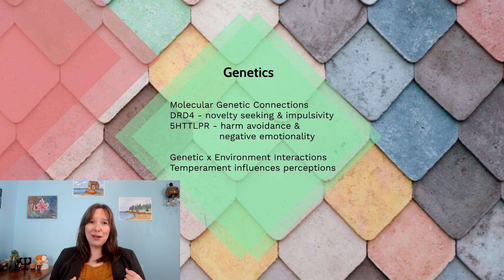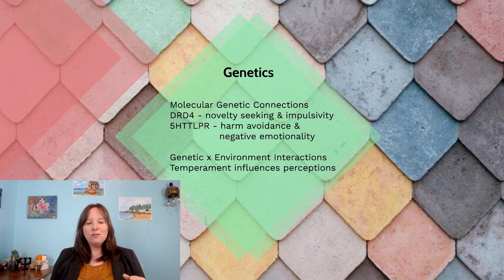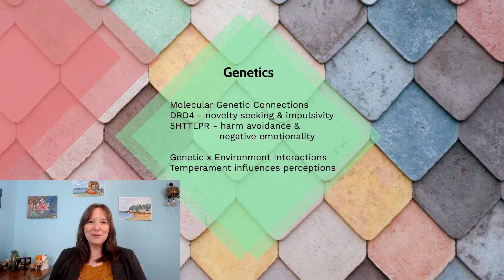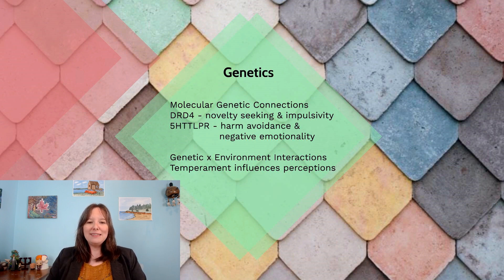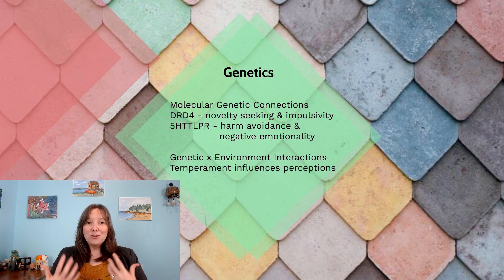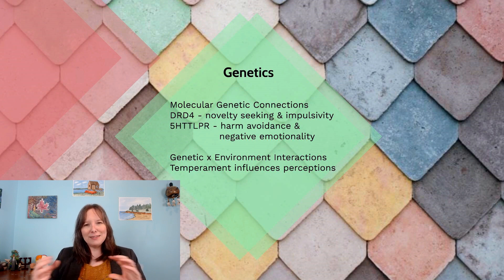There's also the 5-HTTLPR, which is associated with harm avoidance or negative emotionality. These individuals may have more activity in what we call the BIS circuits — the behavioral inhibition system — the fear circuit or the panic circuit. We can see how these individuals may be higher in negative emotionality: they're less impulsive, more withdrawn, and more worried about negative things that are going to happen.